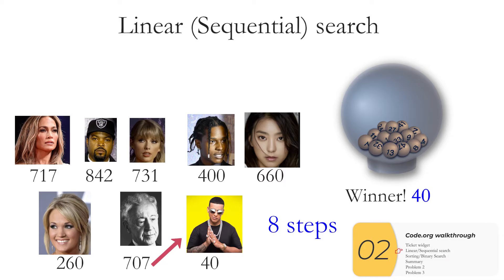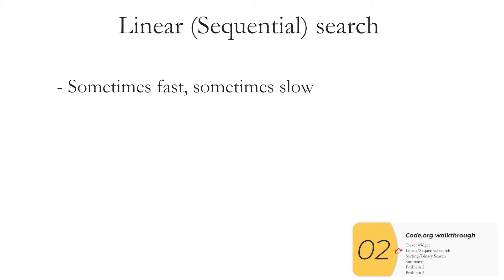So as I have more items that I'm searching through, more items in my list, linear searches can take longer and longer. So recapping once again linear searches can sometimes be fast and sometimes be slow and as I add more items my searches will take more steps. But this can vary a lot.